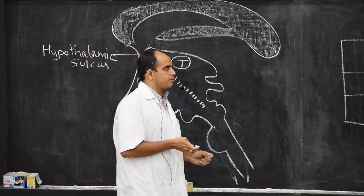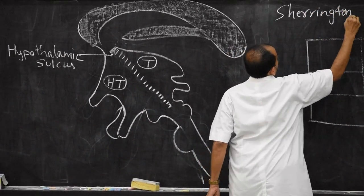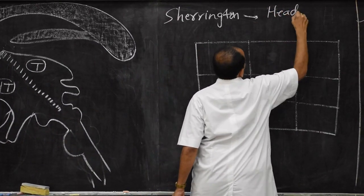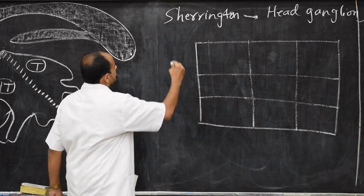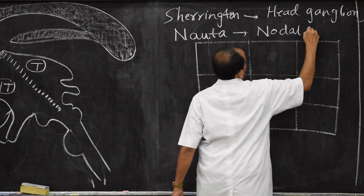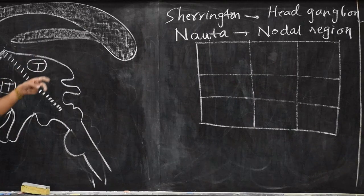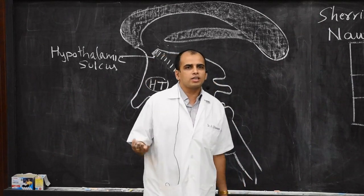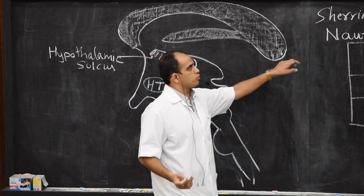Scherrington described the hypothalamus as the head ganglion of the autonomic nervous system. Another person, Nauta, described it as the nodal region for regulating homeostasis in the fluctuating environment. From these two descriptions we can understand the functions of the hypothalamus — it regulates the autonomic nervous system, water intake, food intake, sleep, and various other hormones responsible for homeostasis in our body.